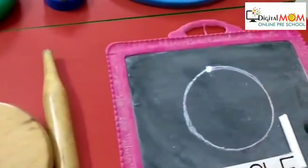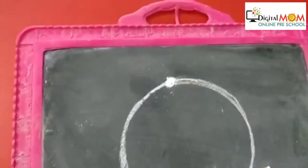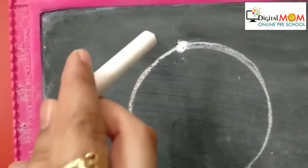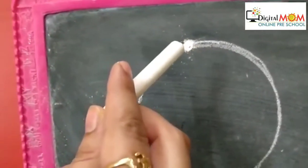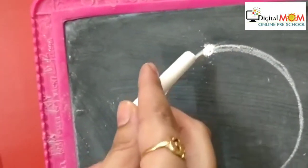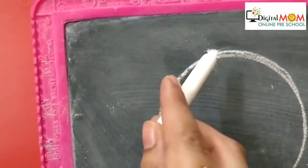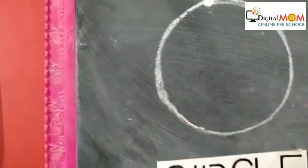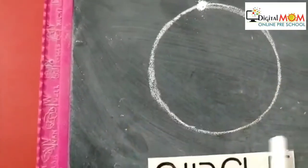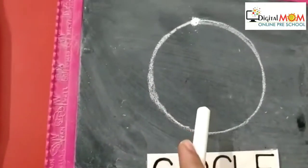Now look here very carefully. It is very easy to identify the circle shape. It starts from the same point and ends at the same point. If suppose you start making from here, then you will end it here only. And it has no sides. It is round in shape. So Mr. Circle is round in shape.